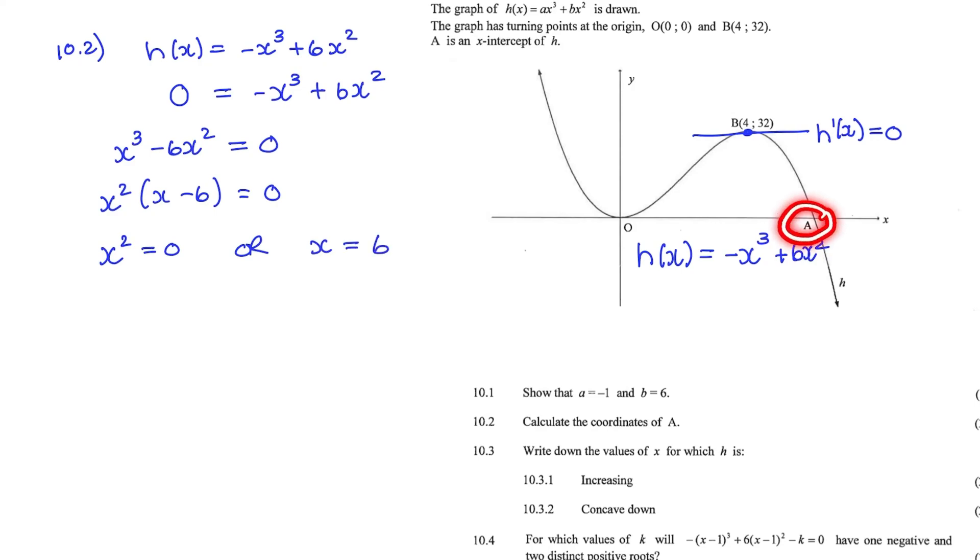But obviously for point A, x cannot be equal to 0 because that's the turning point at the origin. So at A, x must be equal to 6. Therefore, the coordinate of A is (6, 0).